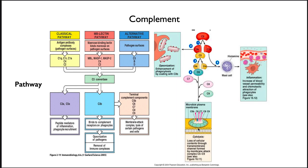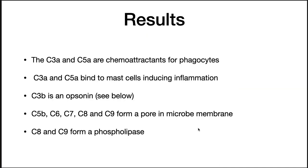When the complement cascade is triggered and amplified, creating pores in cellular membranes: C3a and C5a act as chemoattractants for phagocytes, bringing them to the area as a signal that something bad is happening. C3a and C5a also bind to mast cells and induce inflammation. C3b bound to the pathogen acts as an opsonin. C5b, C6, C7, C8, and C9 form a pore in the membrane, and C8 and C9 form a phospholipase that digests the microbial membrane. The complement cascade is incredibly powerful and deadly when triggered.